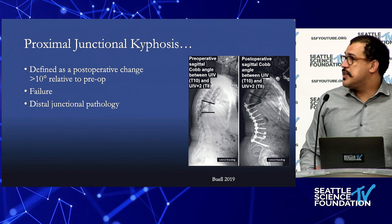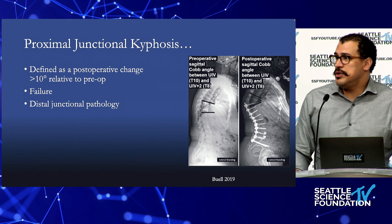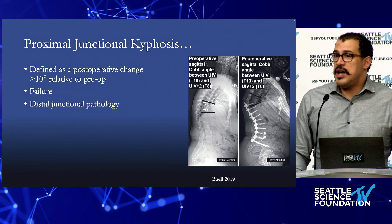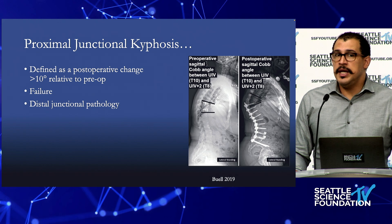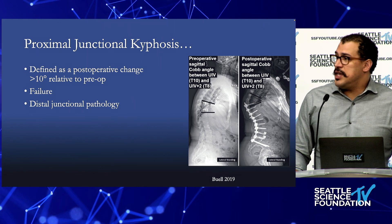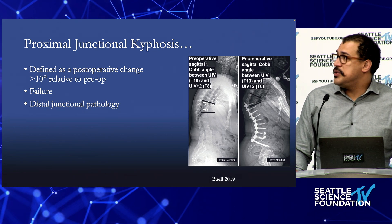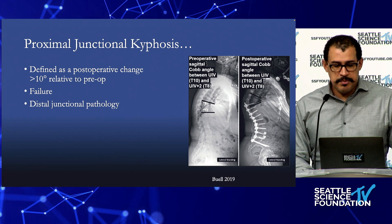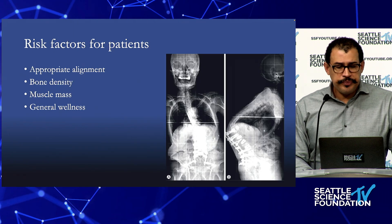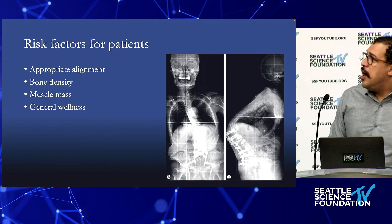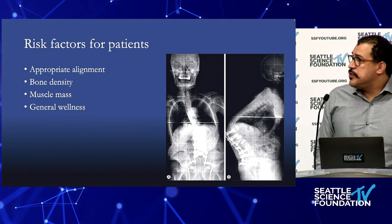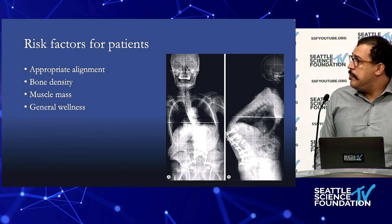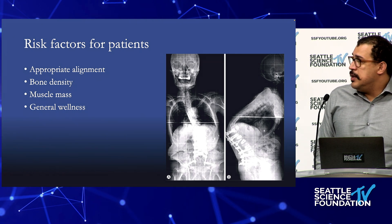A lot of these concepts can also be applied to distal junctional failure. We haven't talked much about cervical thoracic deformity today, but all of these principles apply to longer constructs in the cervical thoracic spine as well. There are multiple risk factors for patients that we want to keep in mind when having preoperative discussions.